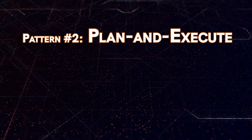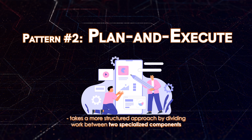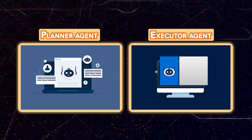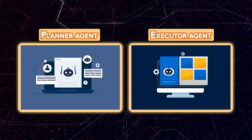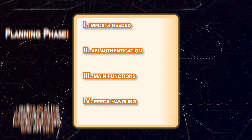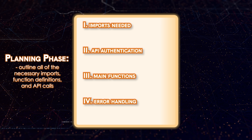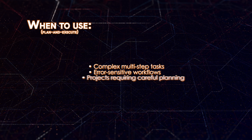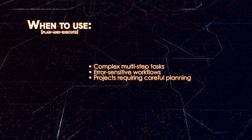Next is the Plan and Execute pattern, which takes a more structured approach by dividing work between two specialized components. A planner agent develops a comprehensive step-by-step plan, and then an executor agent meticulously follows each step, handling any complications during implementation — like an architect drawing a blueprint before construction begins. This pattern shines for complex tasks where mistakes are costly, such as writing a Python script with multiple API integrations, where the planner outlines imports and function definitions while the executor writes the actual code.